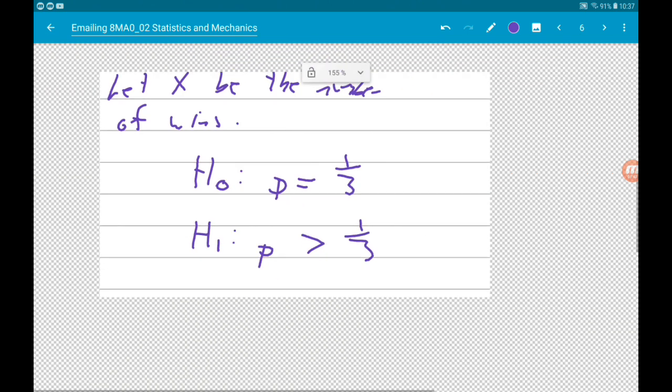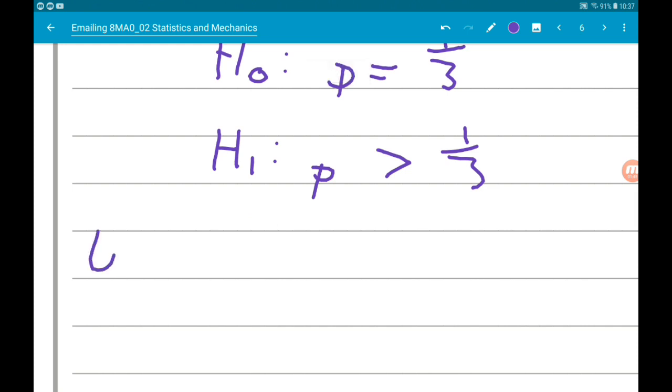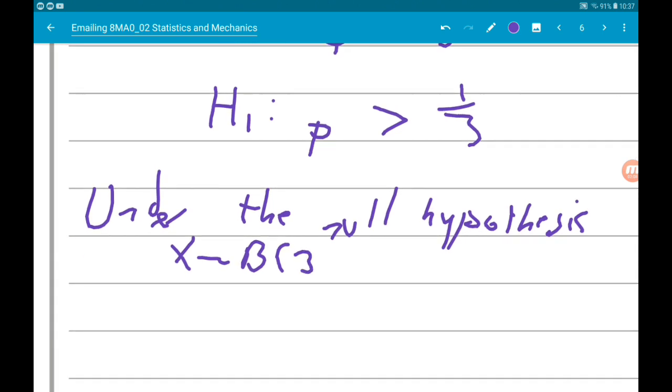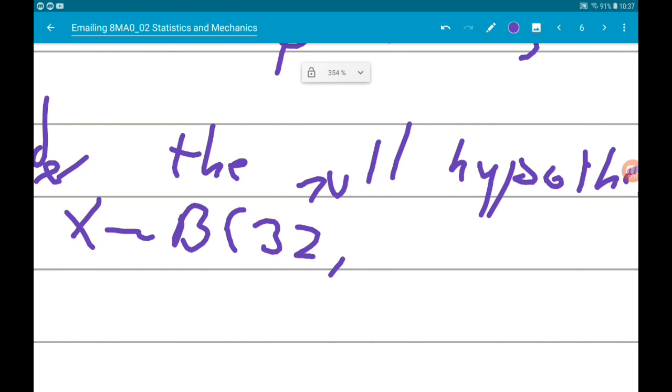Under the null hypothesis, x has a binomial distribution. N is going to be 32 and the probability is one third. Nasir has won 16 of these games, so what we want to do is work out the probability that he would win 16 or more games.